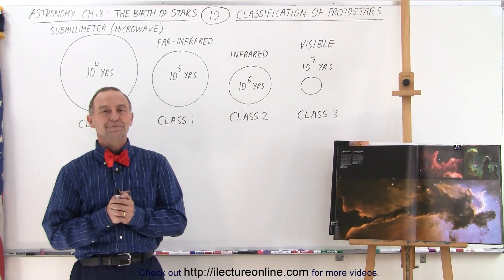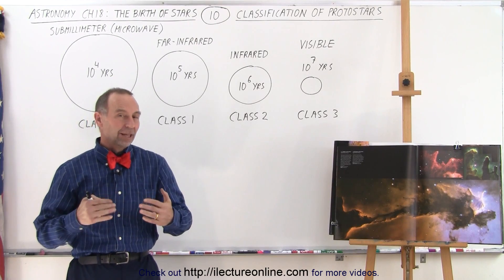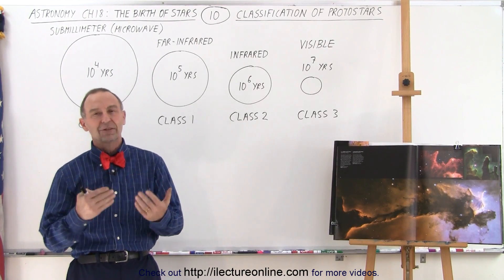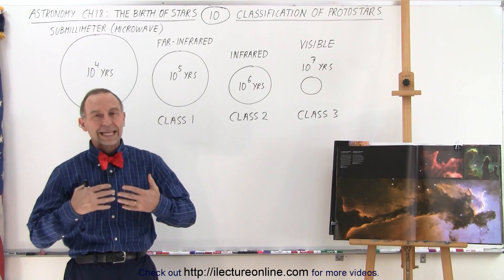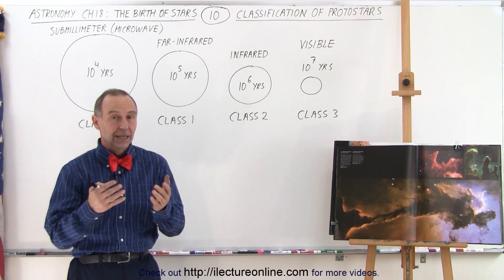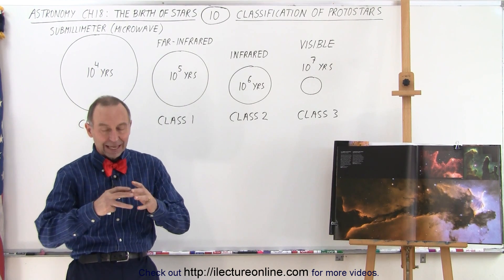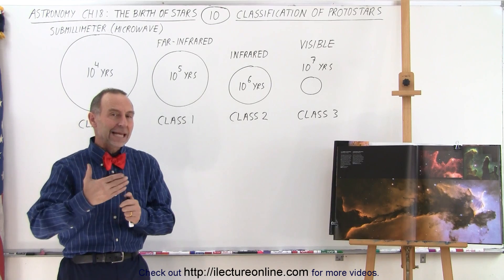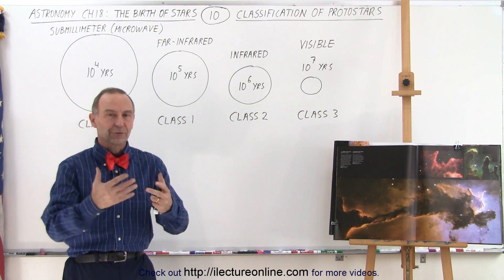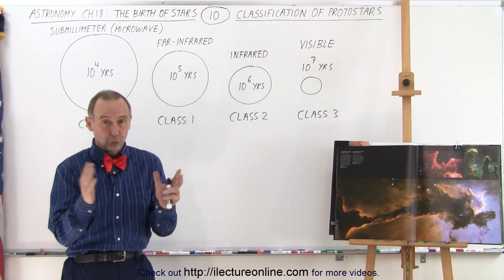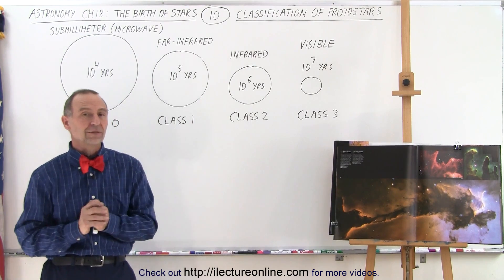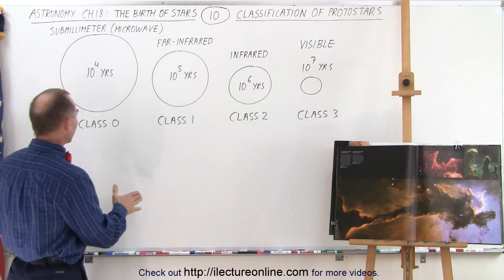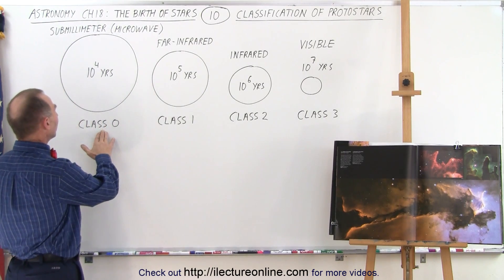Welcome to ElectronLine. It turns out that protostars are also classified according to the kind of radiation that they emit. As they get warmer and warmer, they begin to radiate at higher and higher frequencies and shorter and shorter wavelengths. There are four classes, starting with class zero.